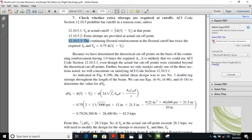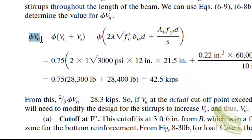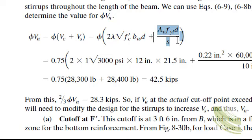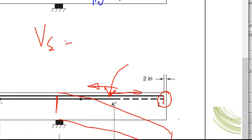Since we determined the theoretical cut-off points on the basis of the continuing reinforcement having one times the required As, it is unlikely we could use that ACI code section. We will concentrate on satisfying this one criterion. To satisfy it we need to calculate phi Vn, where phi Vn equals phi Vc plus Vs — the shear capacity of concrete plus the shear capacity of stirrups.